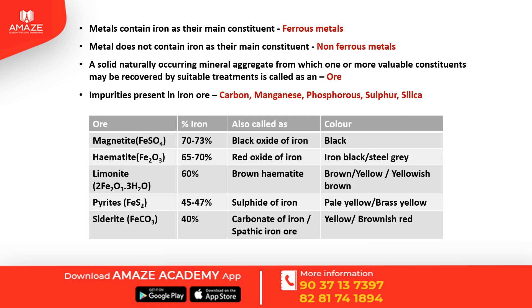Iron ore is of different types. Magnetite has an iron content of 70 to 73% and is also called black oxide of iron; its color is black. Hematite has 65 to 70% iron content and is also called red oxide of iron. Its color is iron black or steel grey.